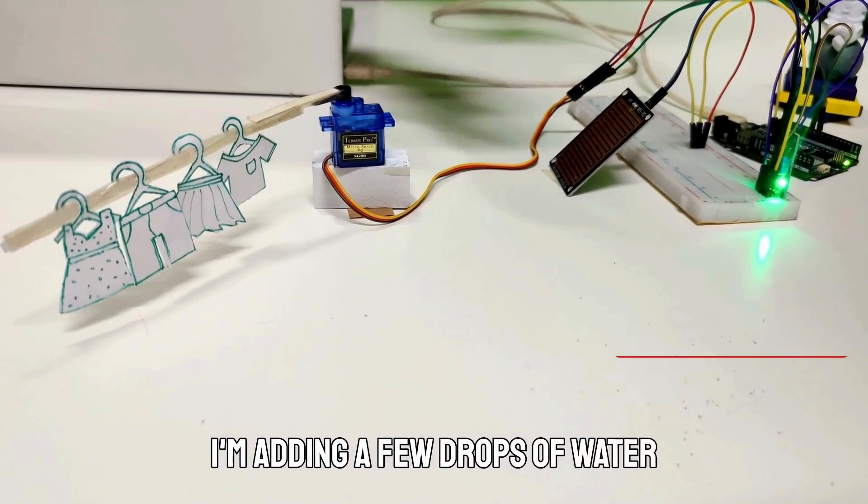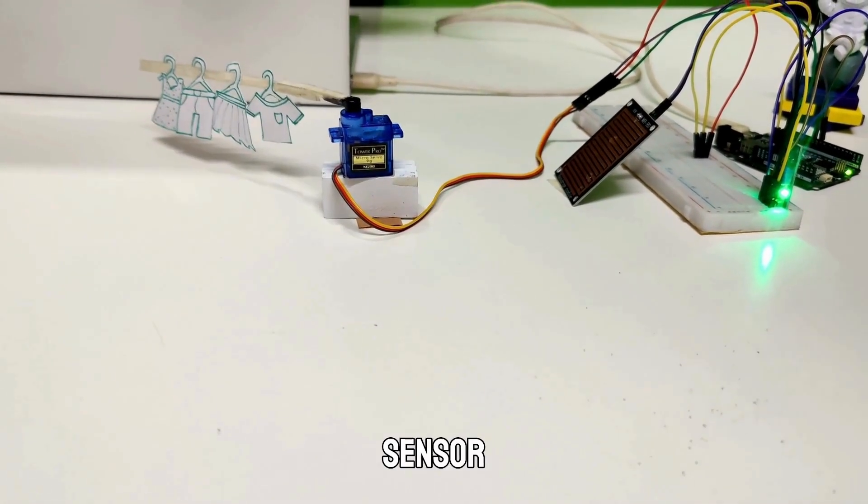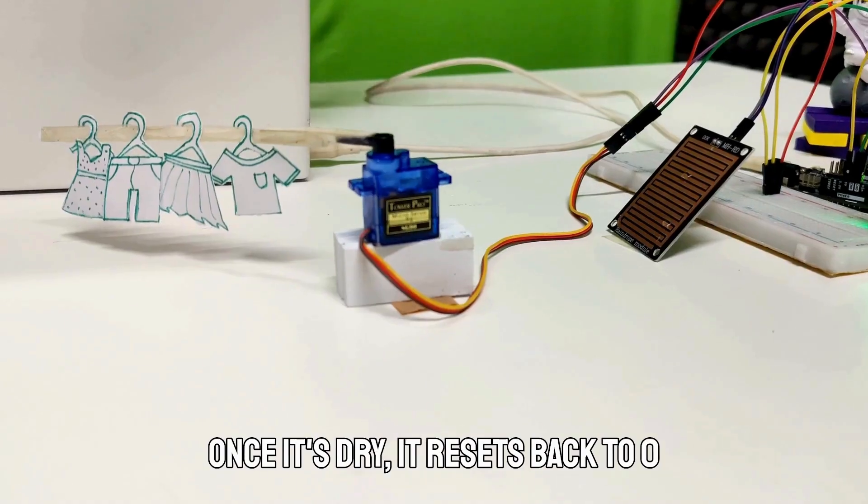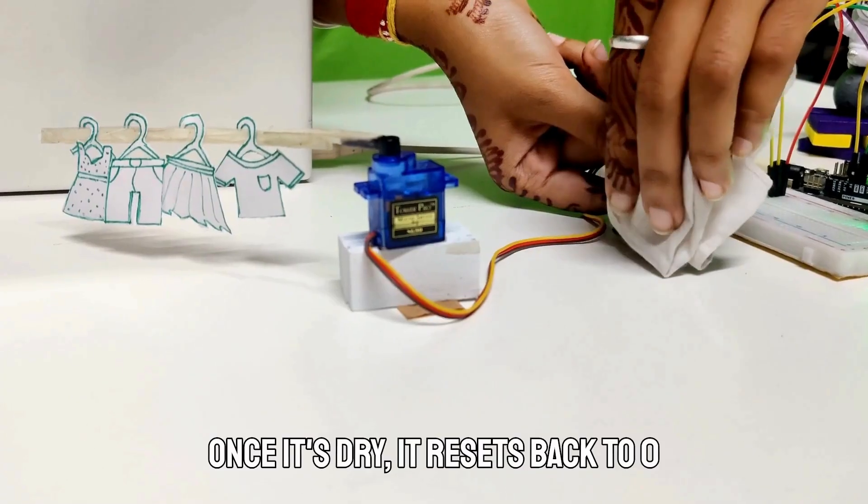I am adding a few drops of water onto the sensor. And there you go. The servo moves to 90 degrees. Once it's dry, it resets back to 0 degrees.